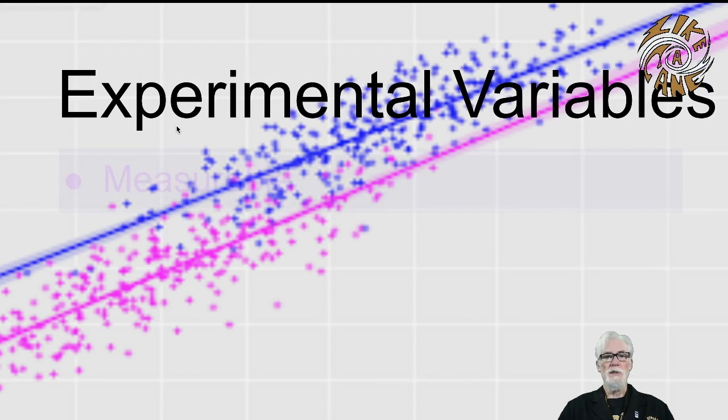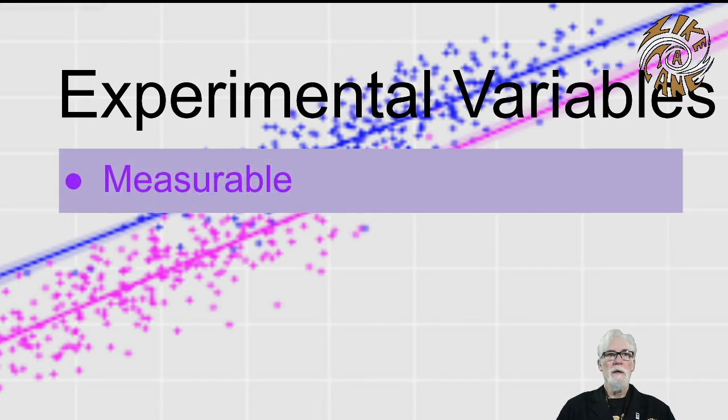What we need for numbers are things called experimental variables. These are the quantities that generate our data. There are a few characteristics that these variables always have. One of them is that they are measurable. In designing an experiment, we need to think about how the quantity we're interested in can be measured with the best precision that's available to us.